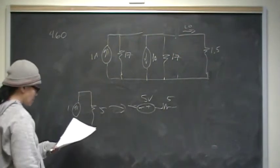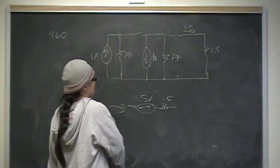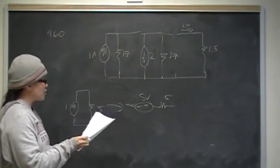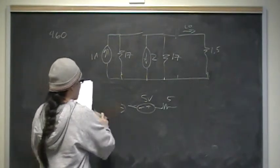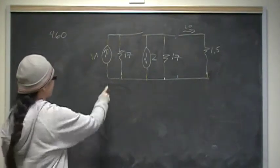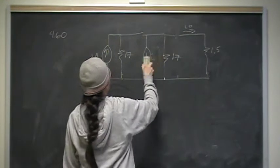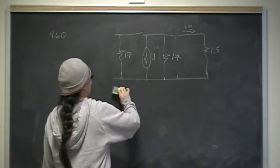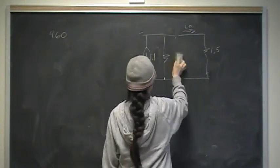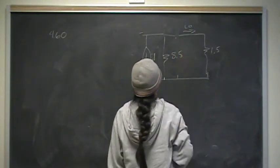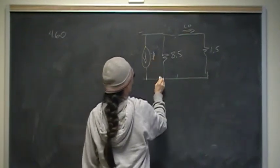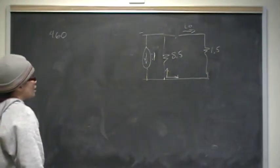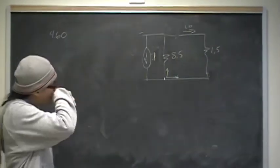Parallel currents add. I have 2 amps and 1 amp in opposite directions, giving a net of 1 amp. Two equal 17-ohm resistors in parallel give half the value: 8.5 ohms. So now I have 1 amp with two parallel branches — the 8.5-ohm resistor and the 1.5-ohm resistor — and the current splits between them. I'll use current division to solve for I-naught.